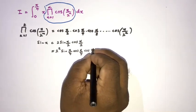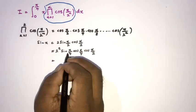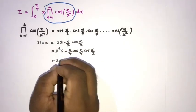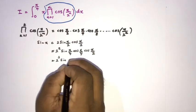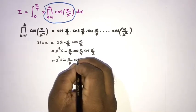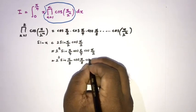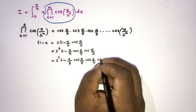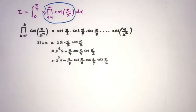Applying the double angle formula once more for the sine function, we get 2 raised to the 3 times sine of x over 8, times cosine of x over 8, cosine of x over 4, and cosine of x over 2. Now we can see a clear pattern emerging.